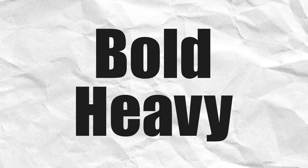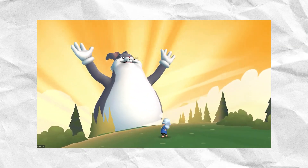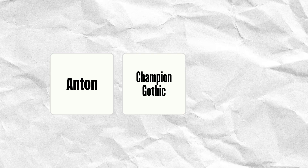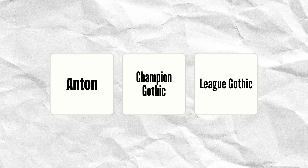The fourth type of font is the display font. Unlike the first three, display fonts are meant to catch the eye and make a statement. I always describe them as bold and heavy, because they actually look bold and heavy. They are often used for headlines and titles so they can stand out and grab attention. Some examples include Anton, Champions Gothic, and Lee Gothic.